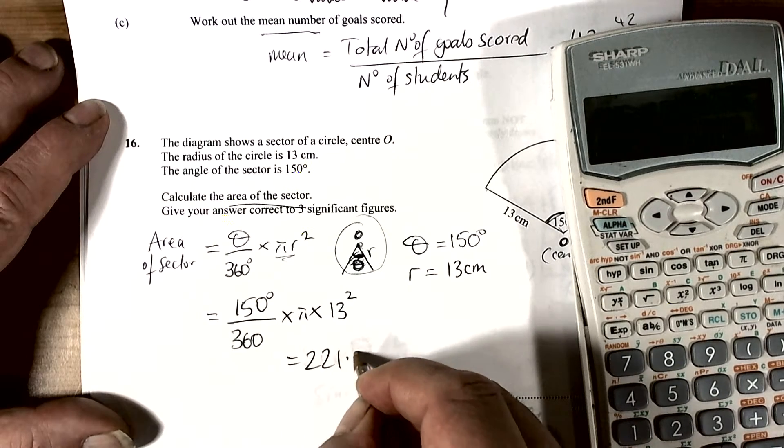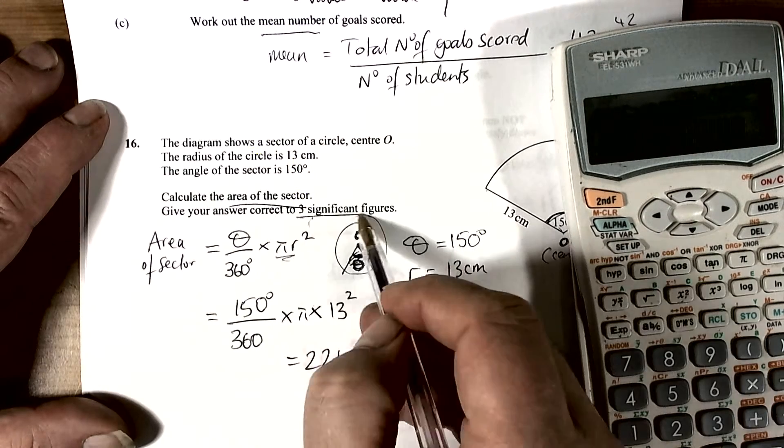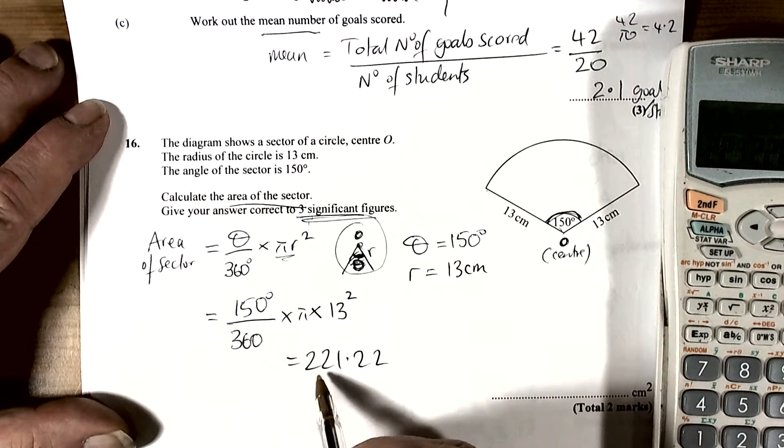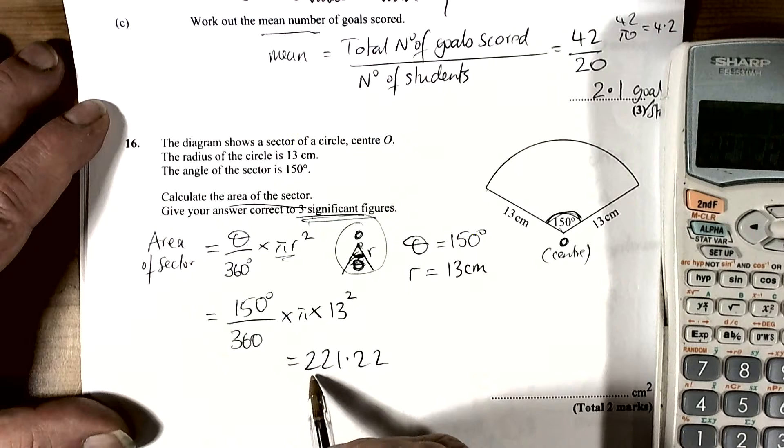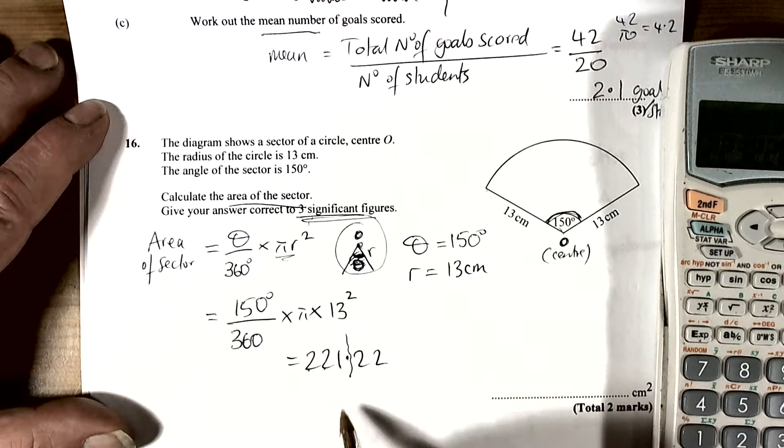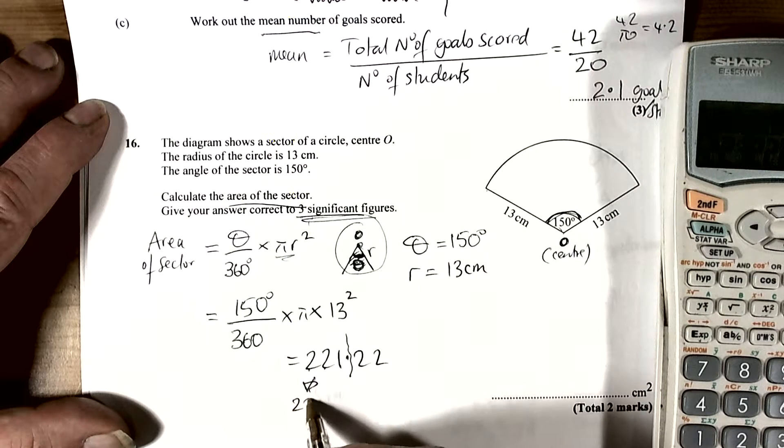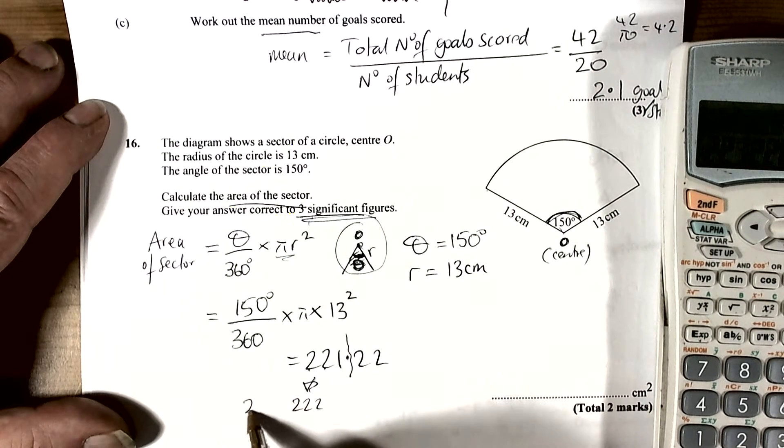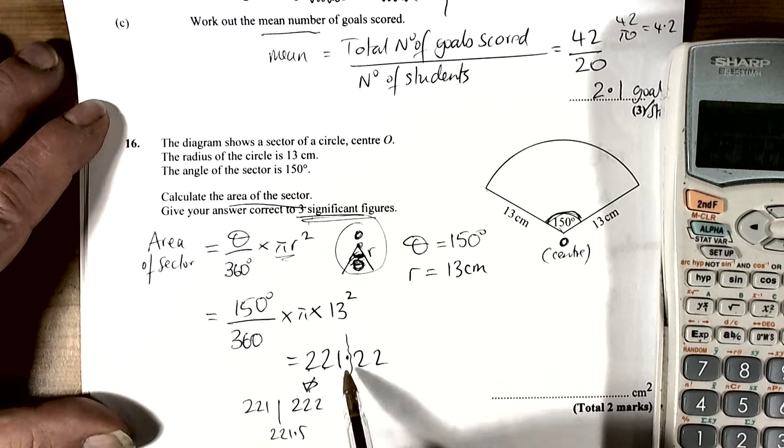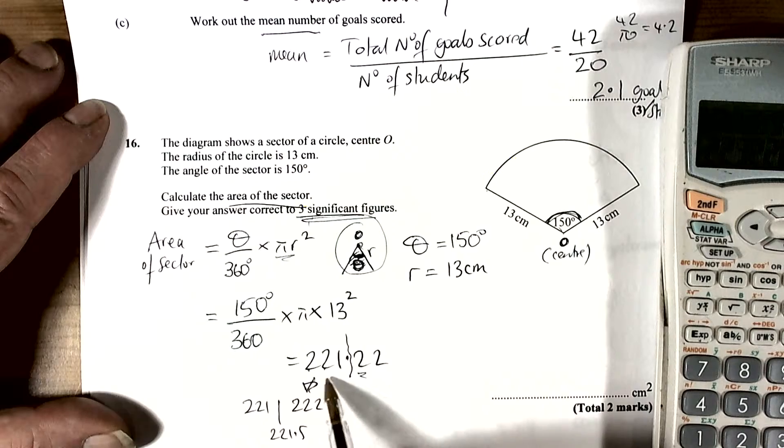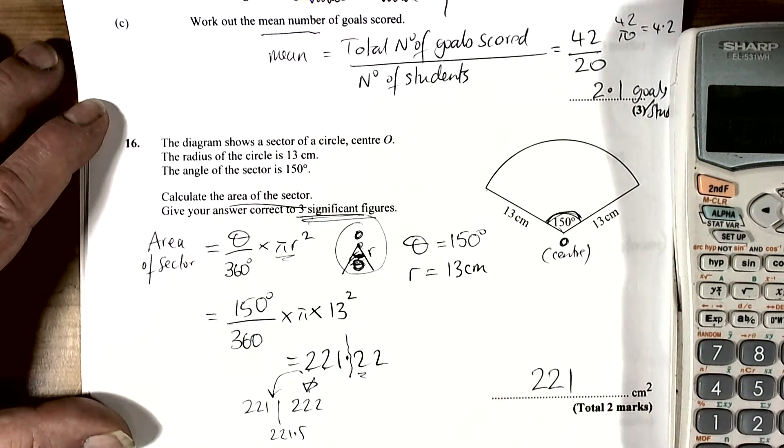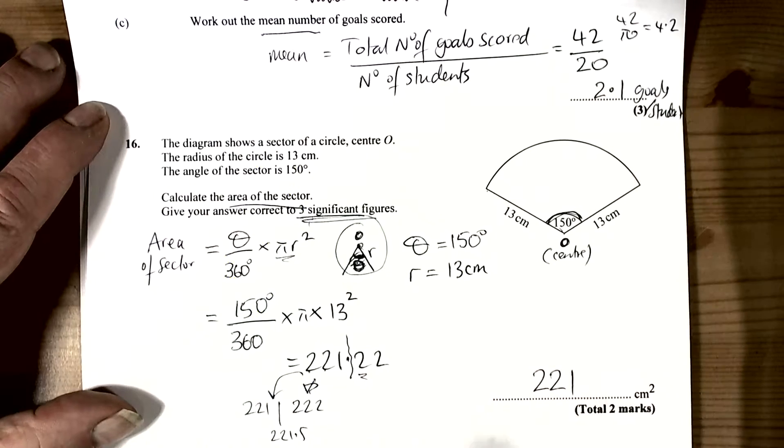So 221.22. Now we recognize the question says it wants the answer to three significant figures. Our first non-zero digit is the 2 here, so we go 1, 2, 3, and cut the number there. This is less than halfway, so it's closer to 221. The answer will be 221 square centimetres.